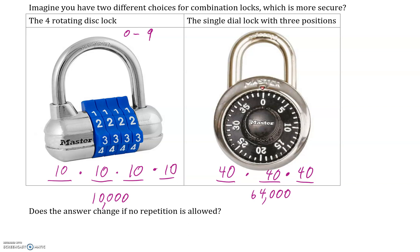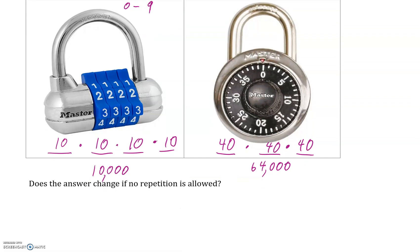But oftentimes, these locks, the one on the right will have no repetition allowed. The one on the left may also have no repetition allowed. So if that's the case, it's probably not quite so likely, but if that's the case, how would we write this? Well, the one on the right probably would never actually have this. So take it with a grain of salt. But the one on the right actually might. So if there's no repetition allowed, every time we choose one, we can't use that number again. So fundamental counting principle, we'd write it like that.